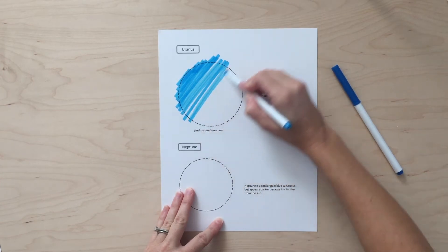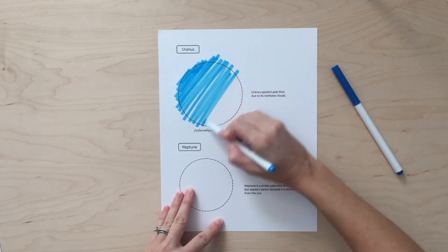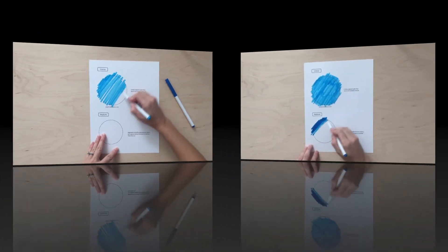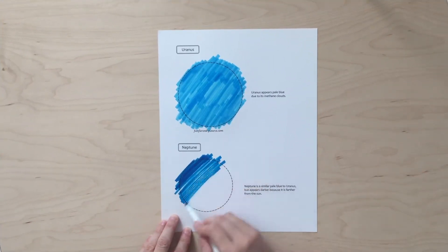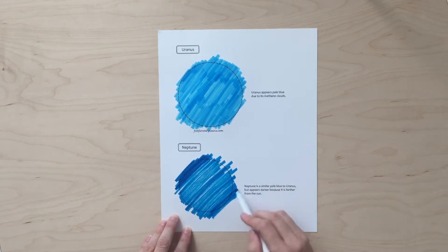Uranus is a pale blue color because of its methane clouds. Neptune is also pale blue, but it appears darker because it's further away from the sun. So I'm going to color it a little darker blue.